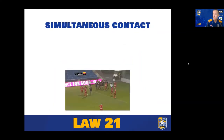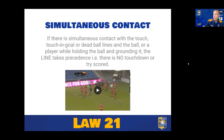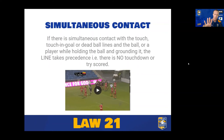Regarding simultaneous contact: if there is simultaneous contact with a touch, touch-in-goal, or dead ball line — either by the player holding the ball or the ball itself making contact with the line when being grounded — the line takes precedence. So if there's simultaneous contact with the touch line from a player holding the ball, it's a line-out. If an attacking player simultaneously touches the touching goal or dead ball line, we go back for a 22-metre restart. The line always takes precedence over the grounding.